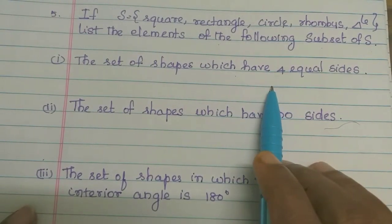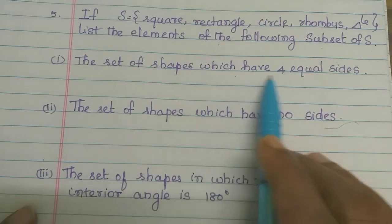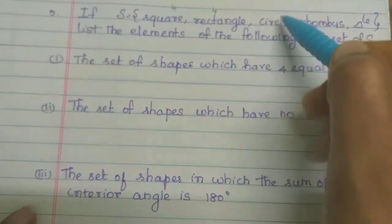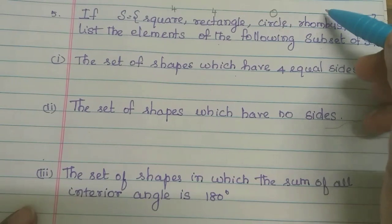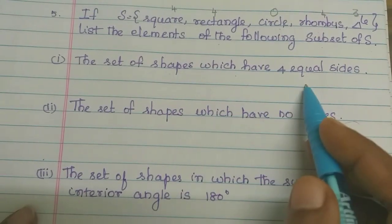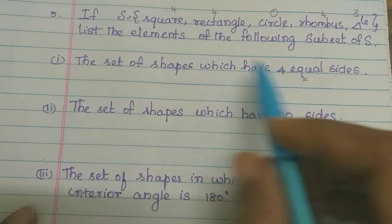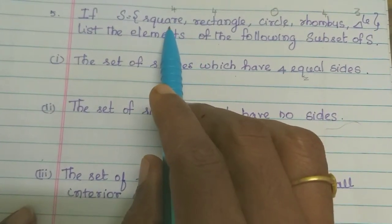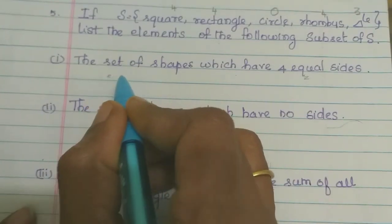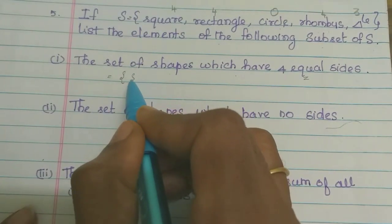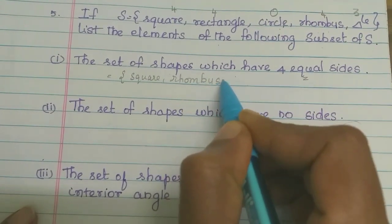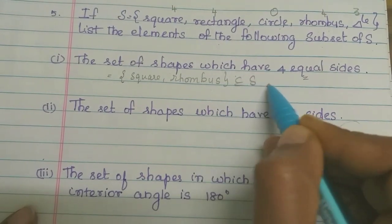The question asks for the subset of all shapes which have 4 equal sides. Square has 4 sides and all sides are equal. Rectangle has 4 sides but not all equal. Circle has no sides. Rhombus has 4 sides and all sides are equal. Triangle has 3 sides. So the subset of shapes with 4 equal sides is: square and rhombus.